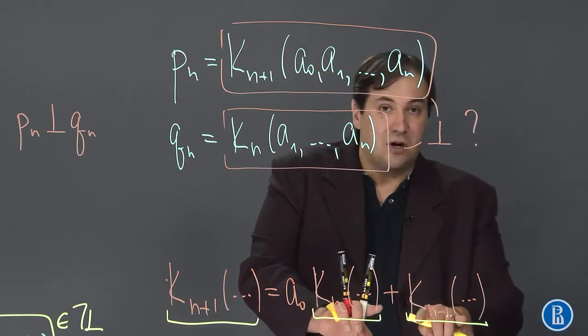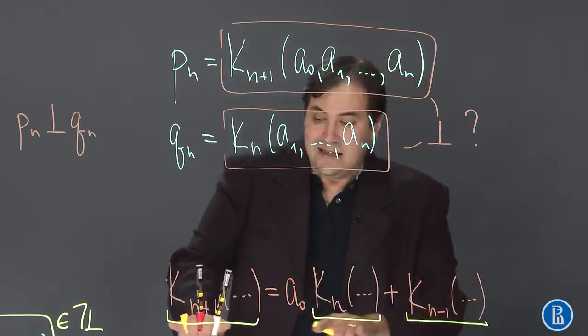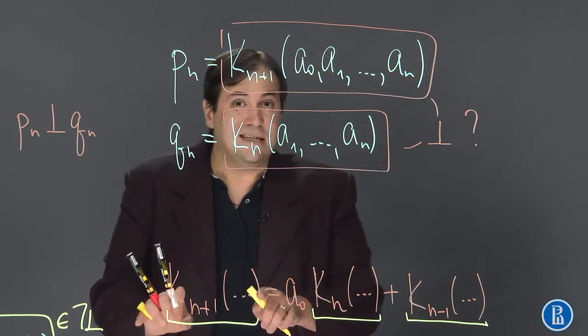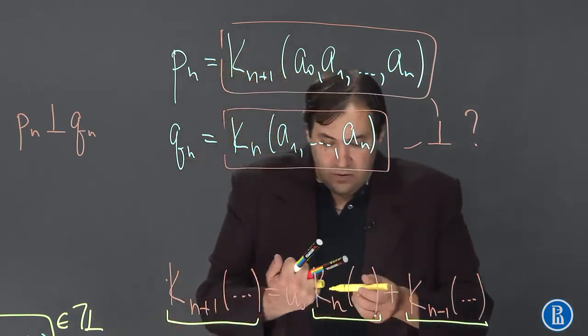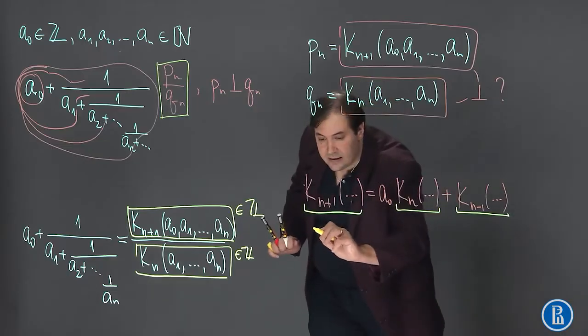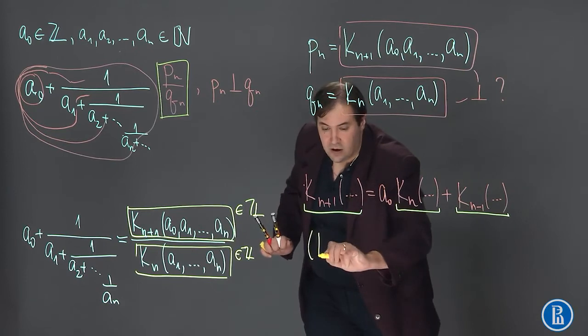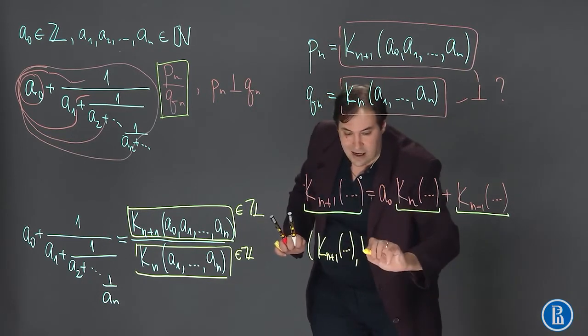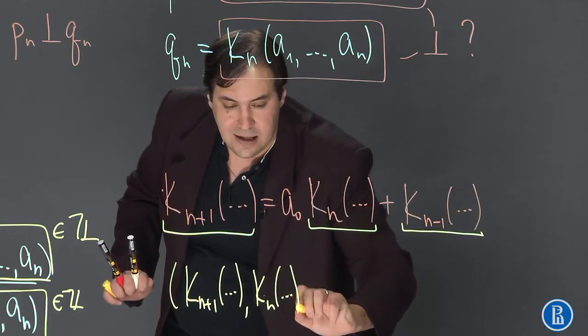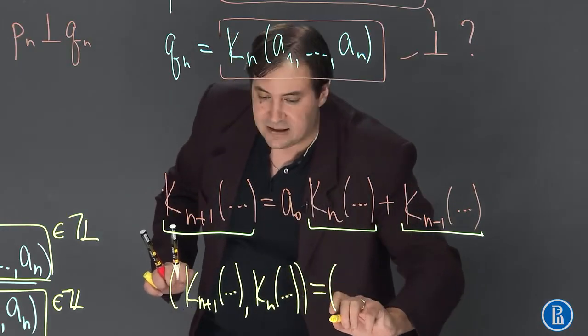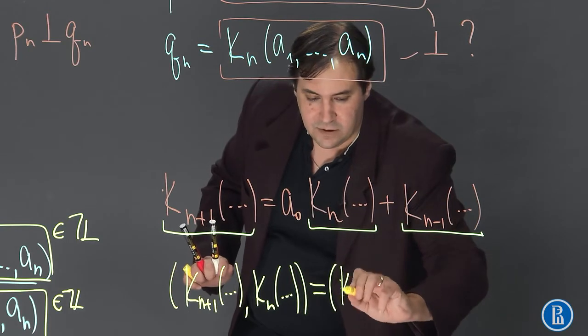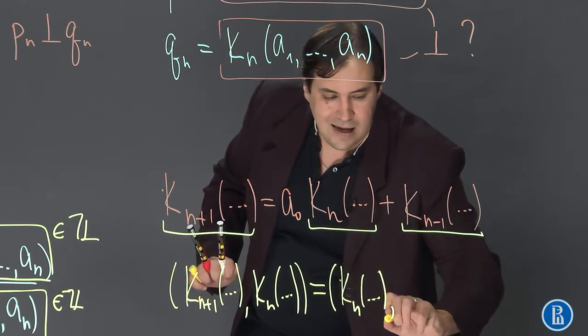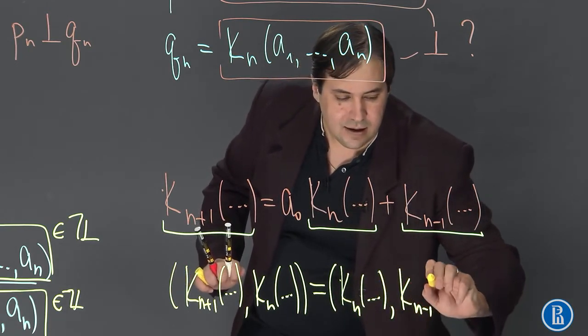Also, if these two integers have common divisor, then this integer here is divisible by this common divisor. So from this we conclude that the greatest common divisor of K_{n+1} and K_n is the same as the greatest common divisor of K_n and K_{n-1}.